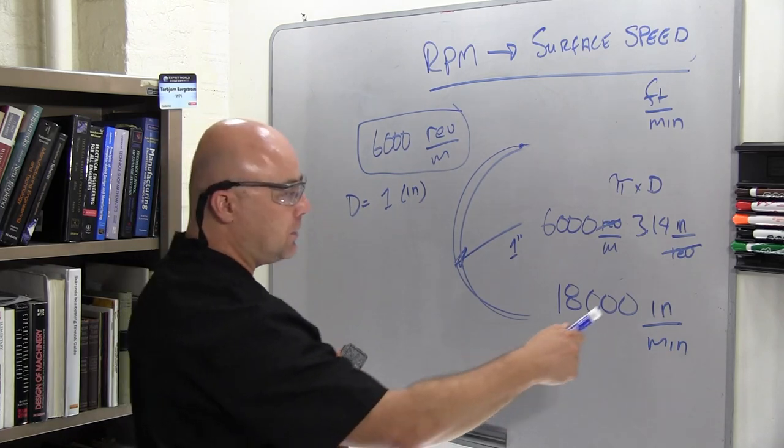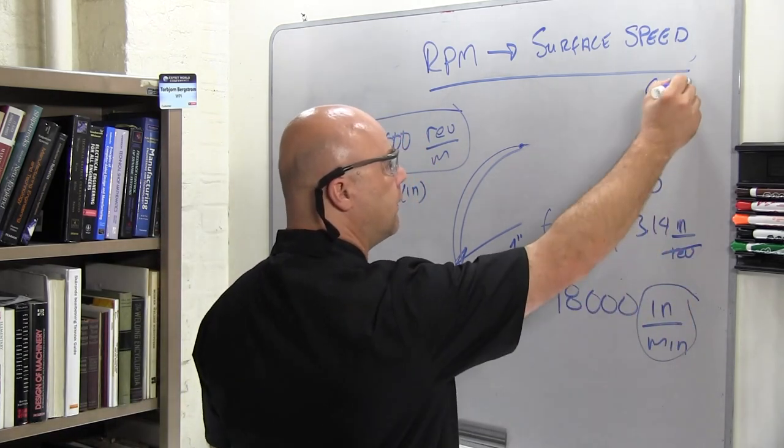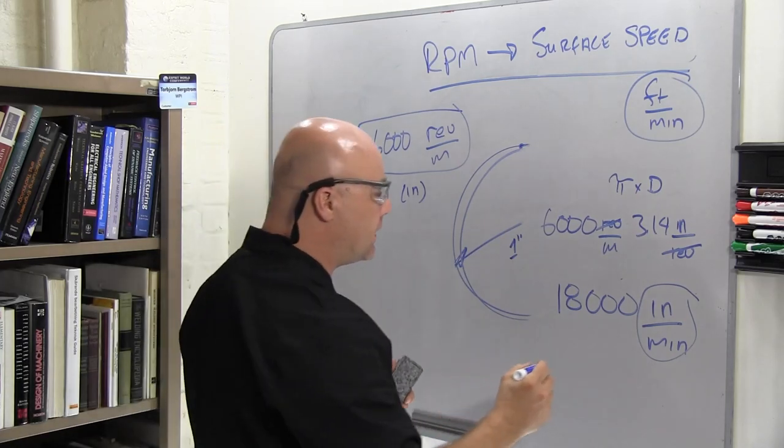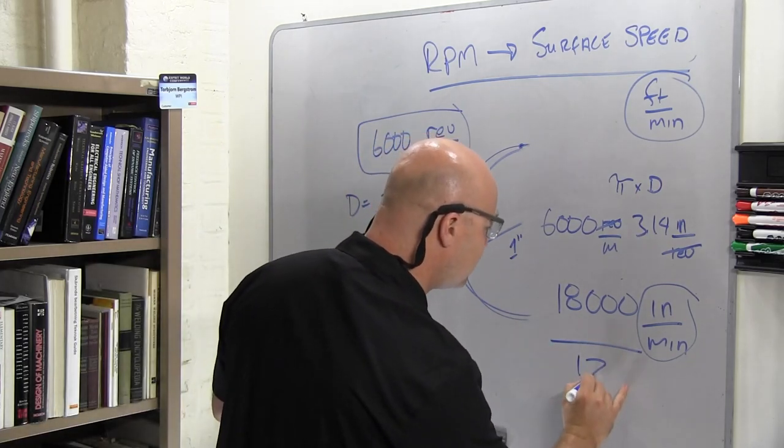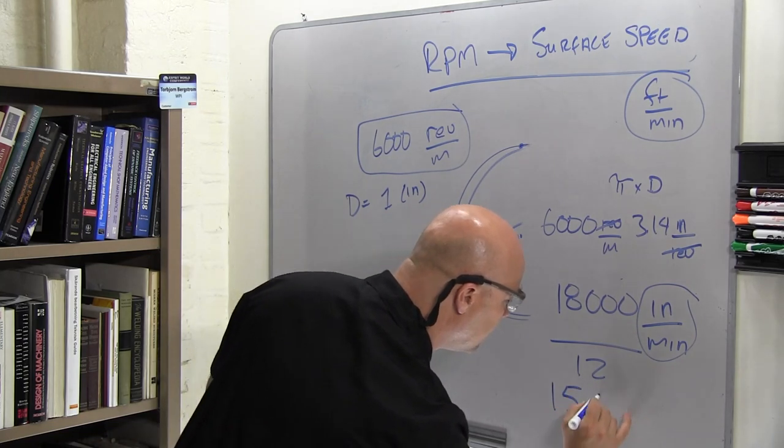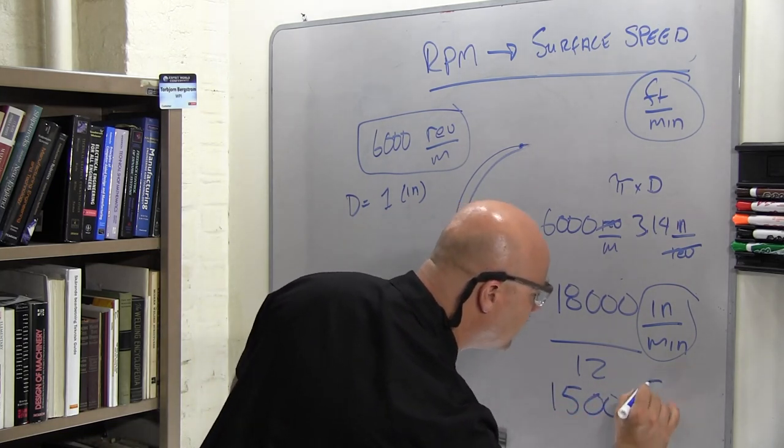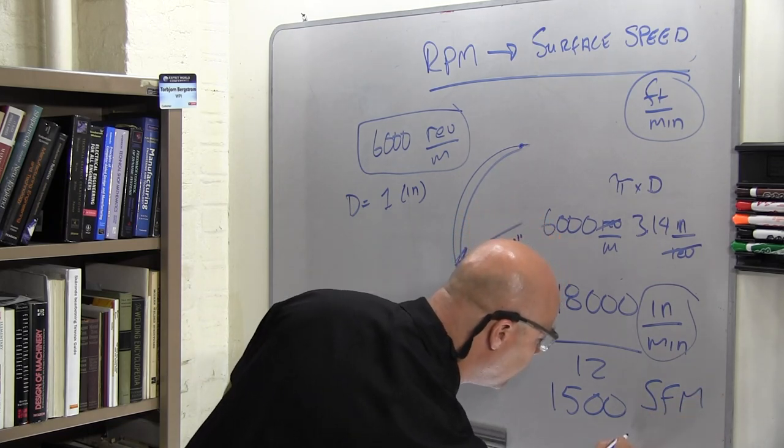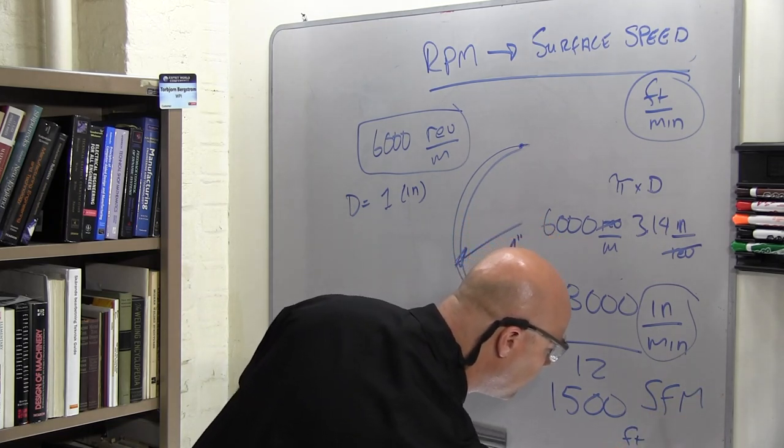If I want to go from inches per minute here to feet per minute, which is what our surface speed is normally expressed in, I need to divide by 12, and this gives me 1,500 SFM, or feet per minute.